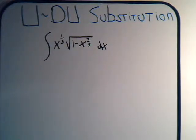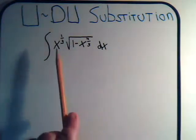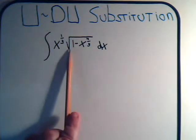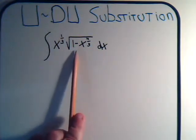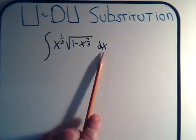Okay, here's another example of using the u-substitution technique for solving an integral problem. Here we want to integrate x to the 1/3 times the square root of 1 minus x to the 4/3 dx.